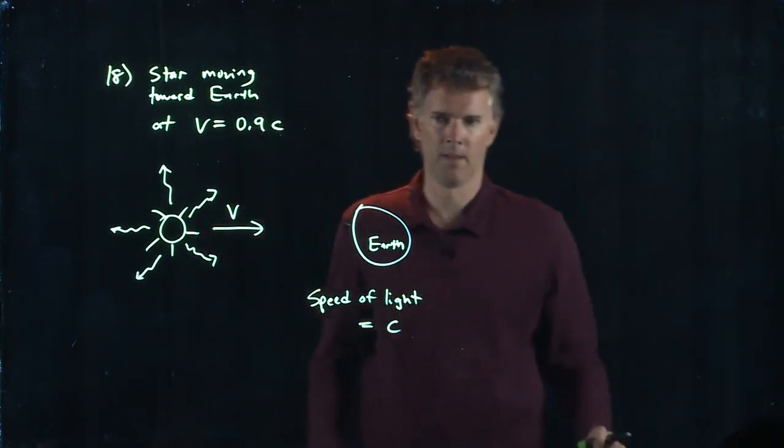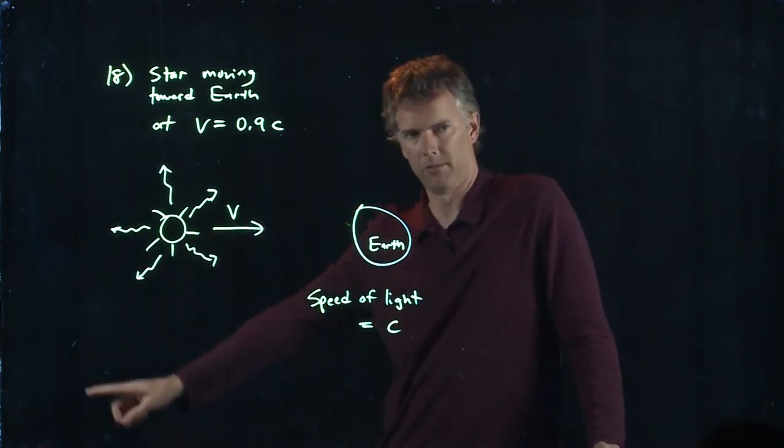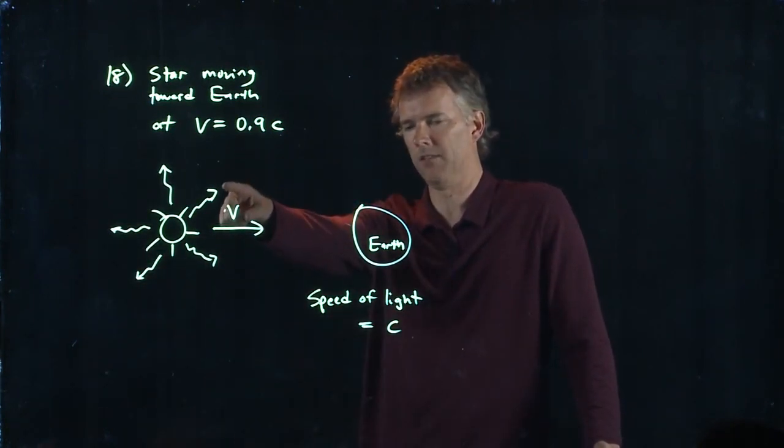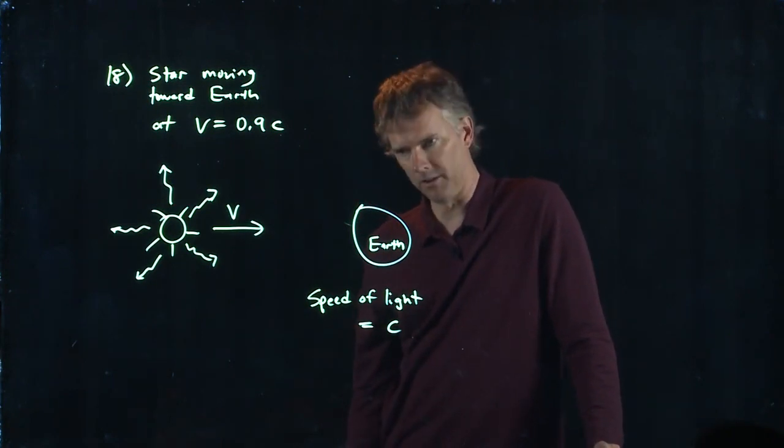C. What if the star was moving away from us at point nine C? What would you measure on Earth for the speed of light? C.